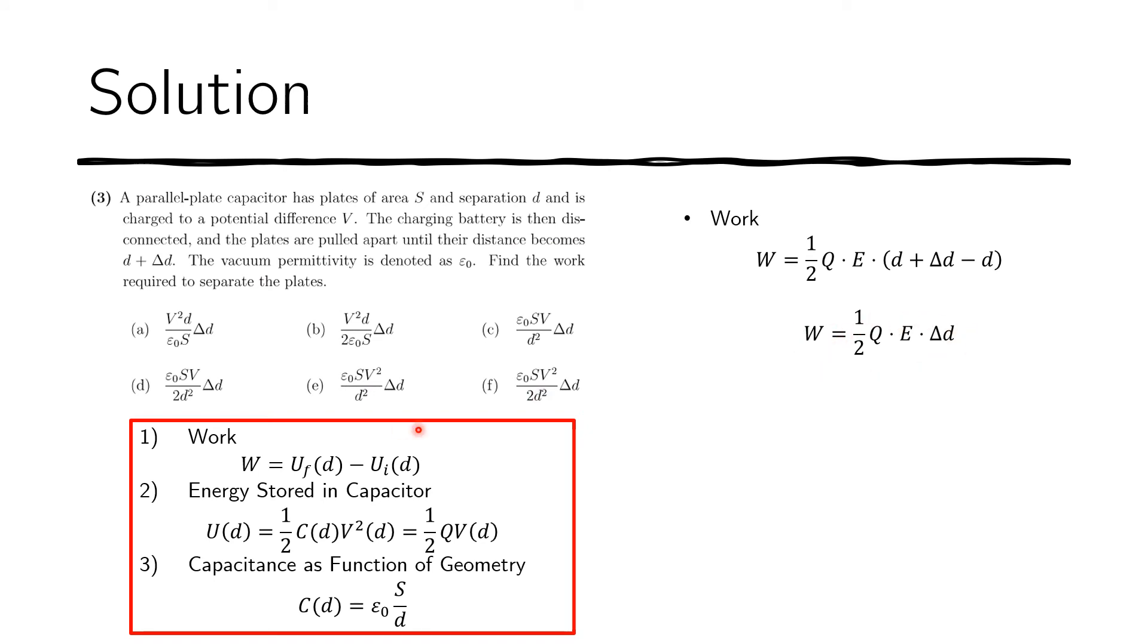Now this is a correct answer. However, these variables are not in the choices. So we need to express Q in terms of these variables and E in terms of these variables. So Q is simple because we recall the definition of capacitance is that it is the constant that when multiplied by the voltage results in the charge. And the electric field, we recall the relationship between the electric field and the voltage. The electric field is the ratio of the voltage to the distance separating the plates. So we can replace E with voltage over D.